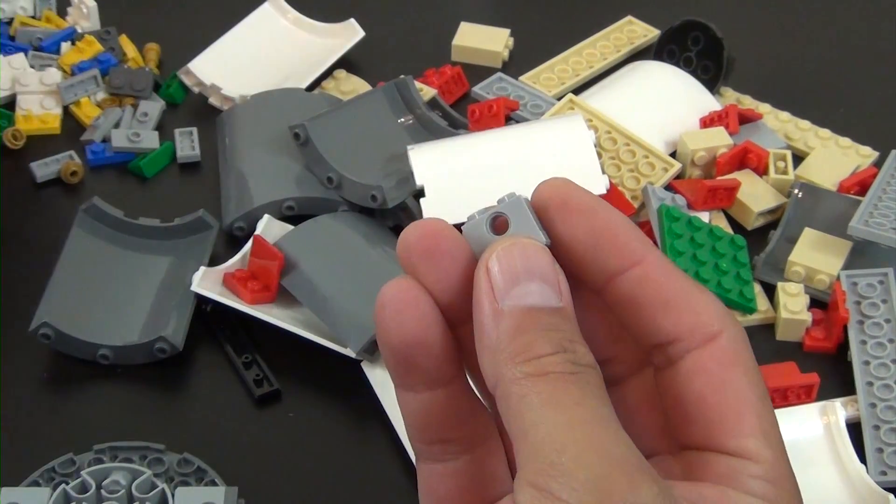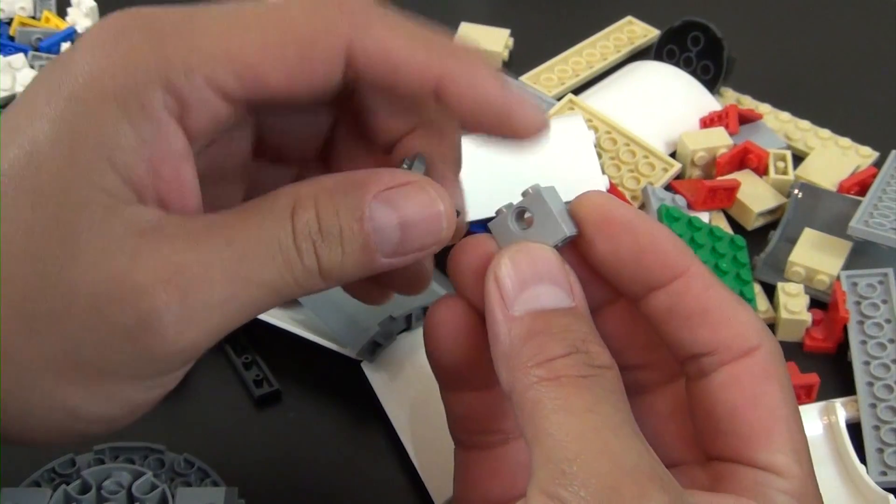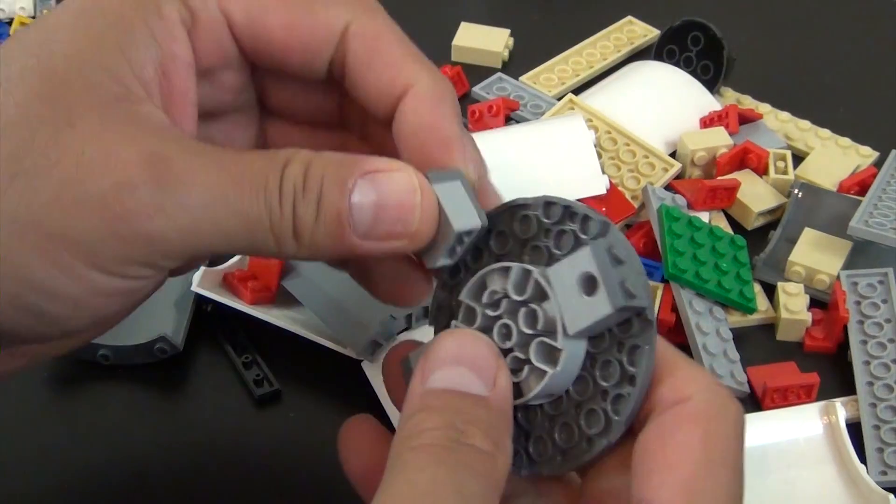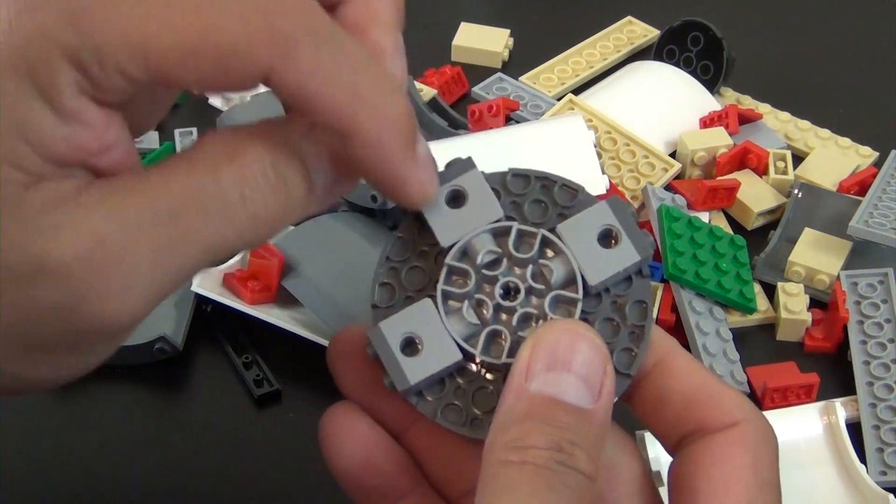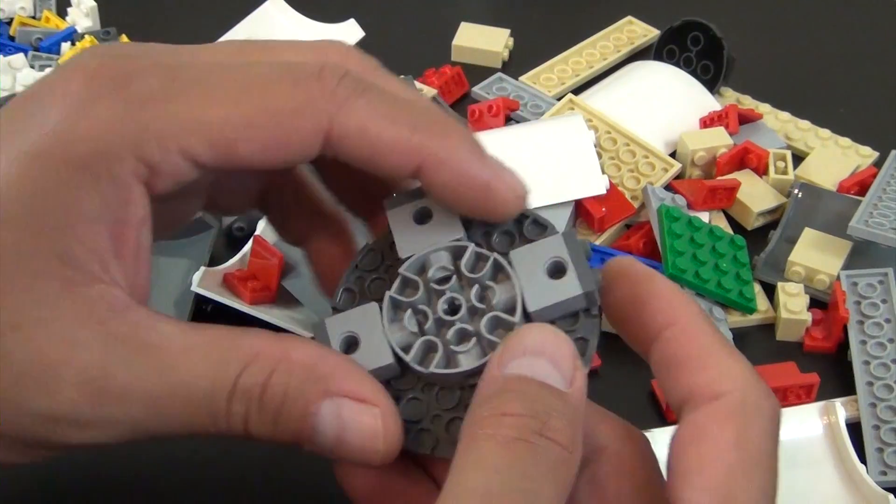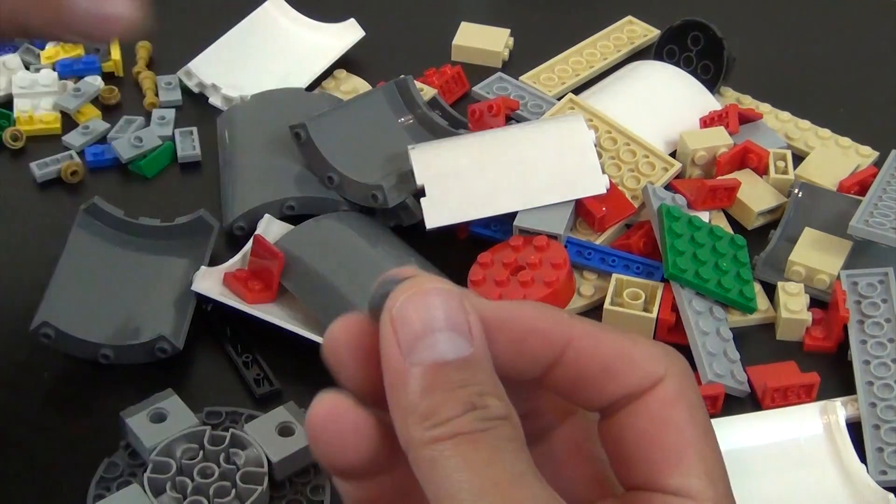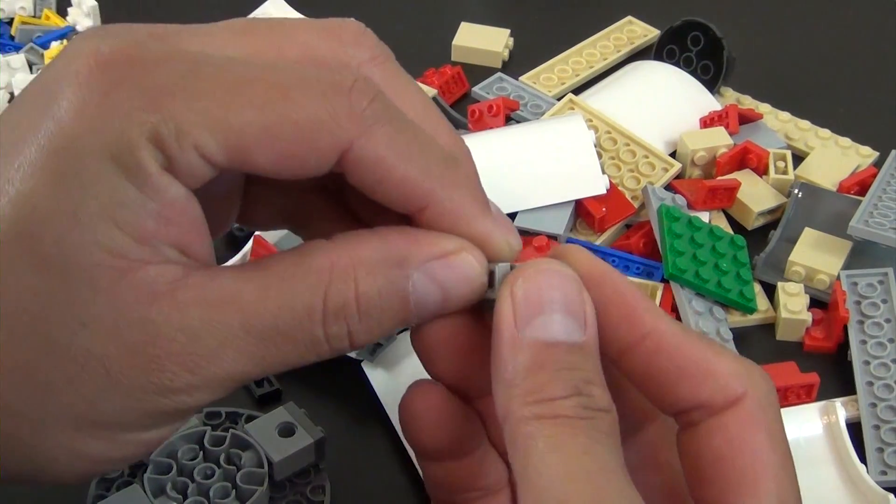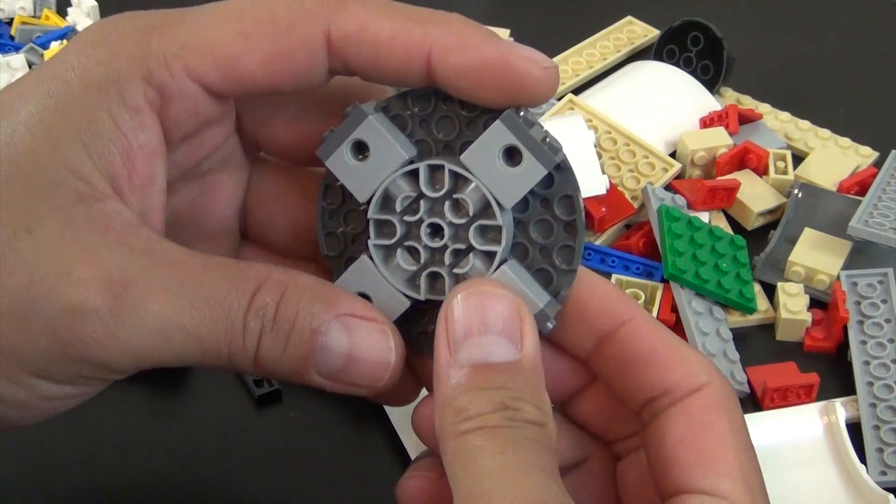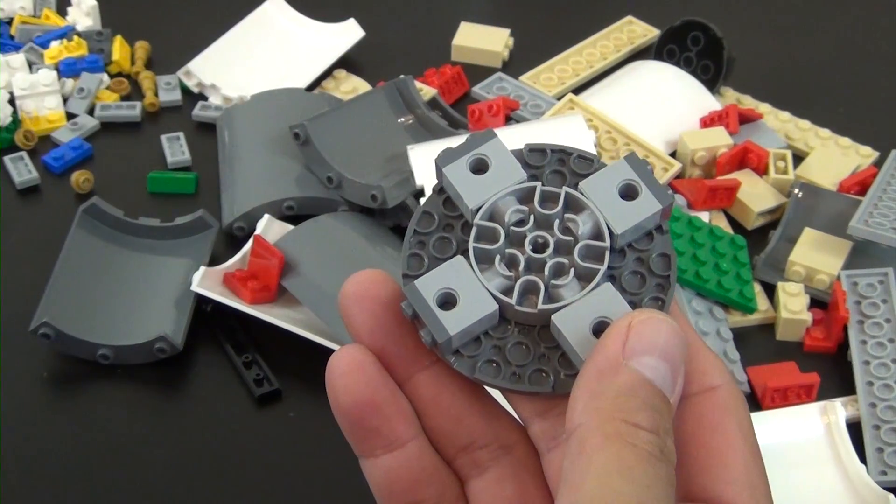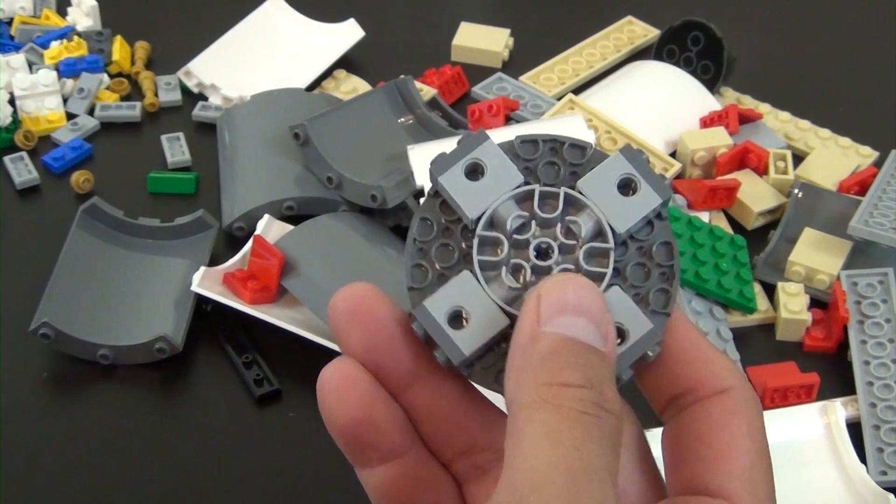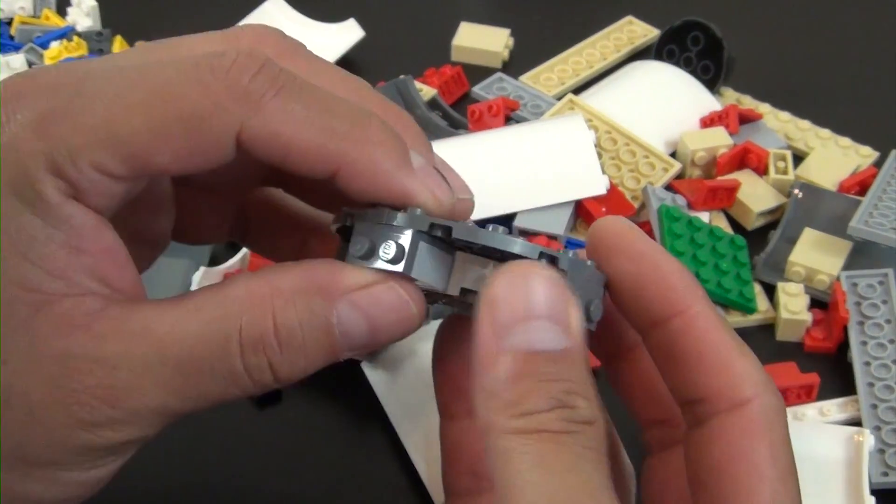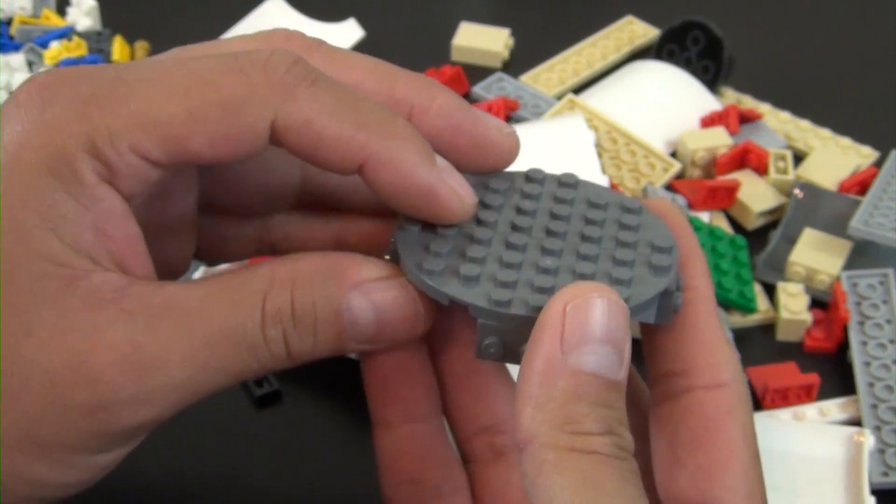You can see right now we're putting a technic brick on a jumper tile with this bracket, and then the bracket that has the studs on the side, we're facing it down so our technic bricks are facing hole side up, which is already a little bit different than normal. Usually those face side by side.